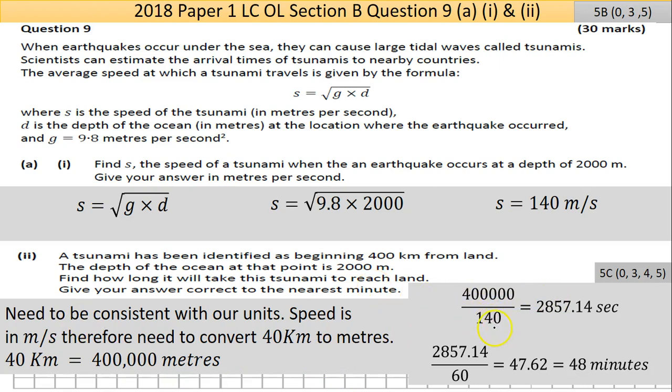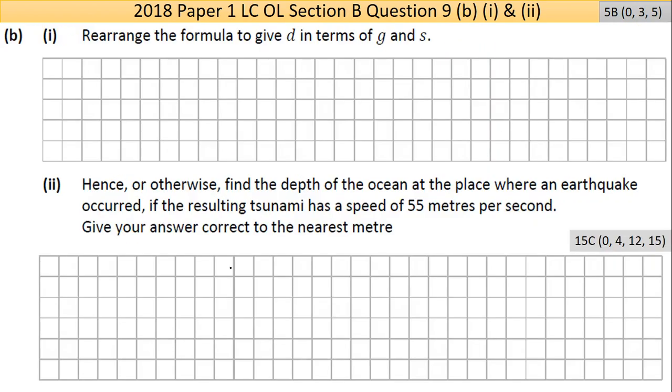Divide 400,000 by 140 and you come up with 2857.14. That's in seconds. The unit of the 140 was in meters per second. Divide that by 60 to get the number of minutes, 60 seconds in one minute. It's 47.62, but to the nearest minute is 48. Tricky enough in a way, that question, but shouldn't be too bad if you're careful about it and practiced.